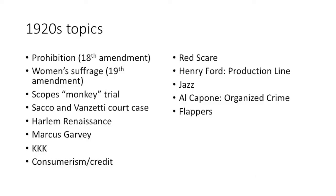Other 1920s topics include prohibition of alcohol, women's suffrage, the Scopes Monkey Trial — whether to teach Darwin's theory of evolution or the biblical version — the Sacco and Vanzetti case showing nativism and anti-immigrant sentiment, the Harlem Renaissance, Marcus Garvey and the Back to Africa movement (a huge influence on Malcolm X), the rise of the second KKK, and consumerism with people buying on credit, which led to problems when the stock market crashed.